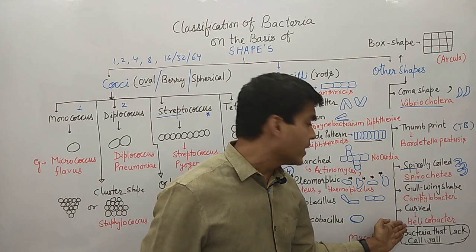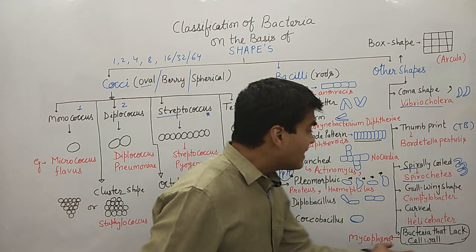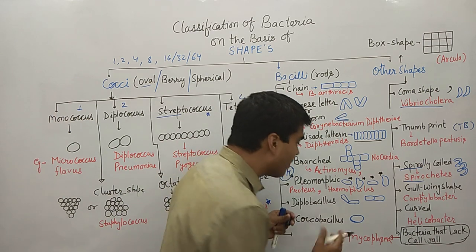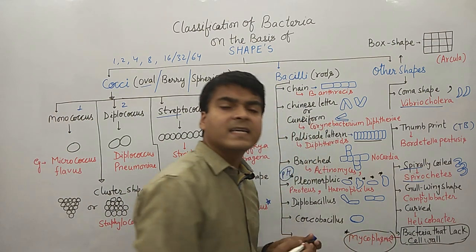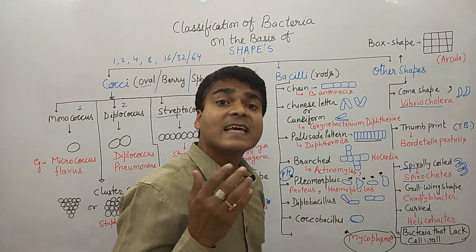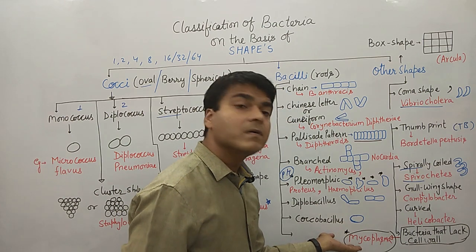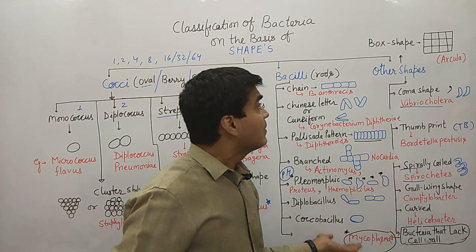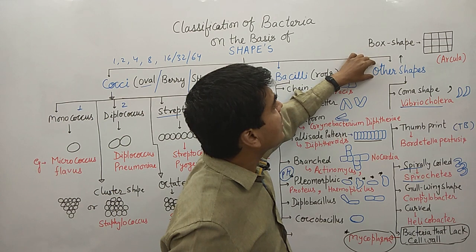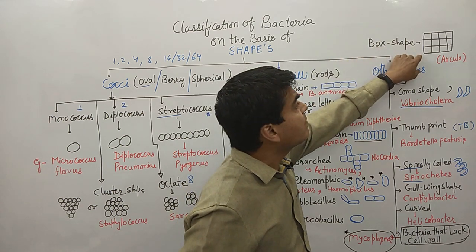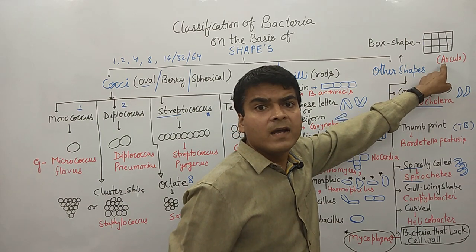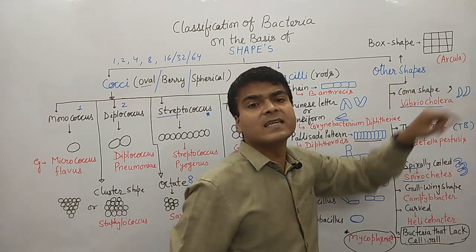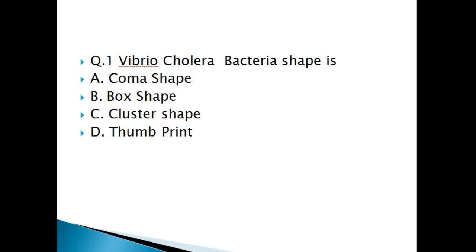Bacteria that lack a cell wall can vary their shape. The example of bacteria without a cell wall is Mycoplasma — examiners frequently ask questions on this. Another shape is box shape — the example is Archaea. So if asked which bacteria is box-shaped, the answer is Archaea.